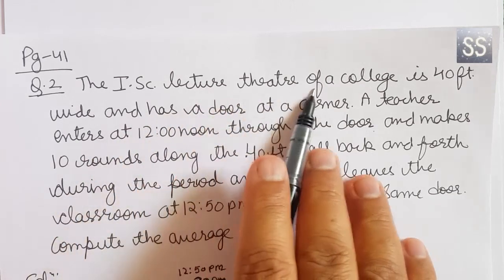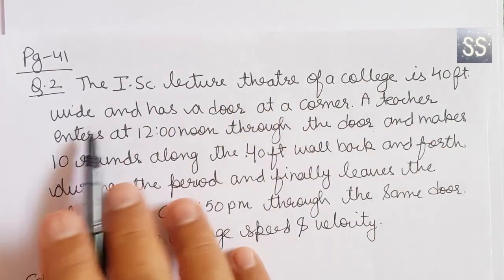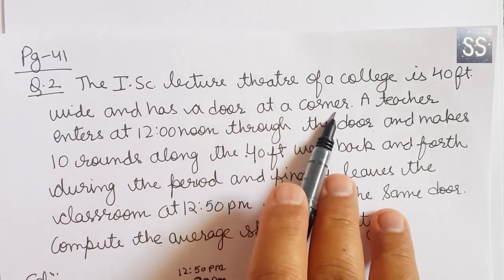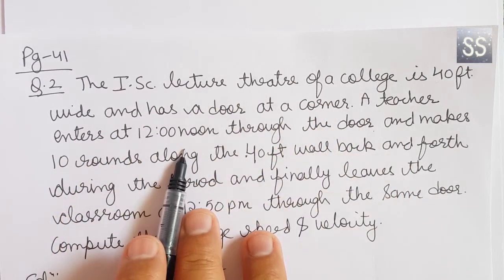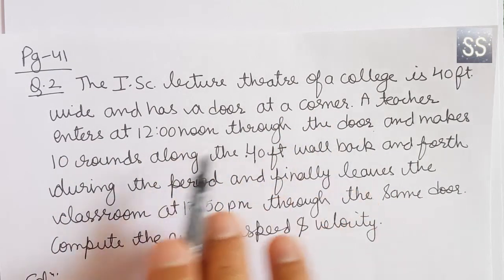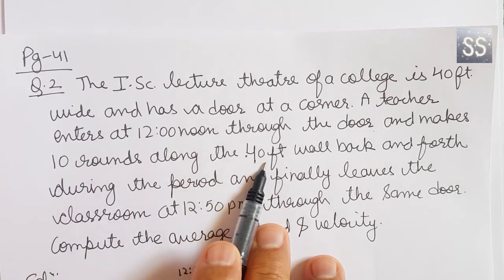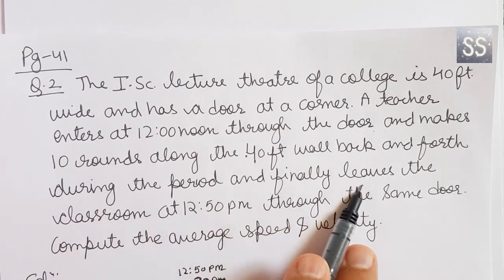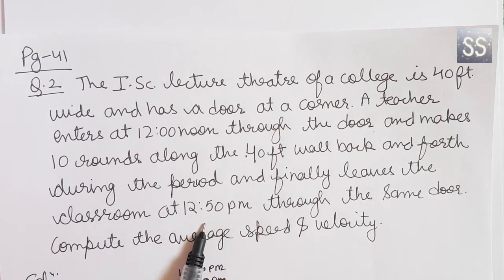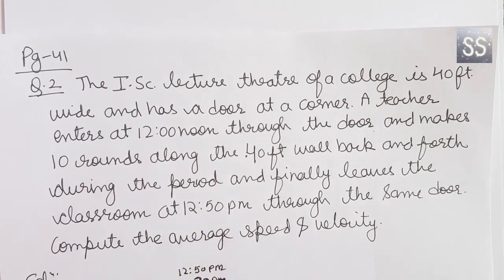The ISE lecture theatre of a college is 40 feet wide and has a door at a corner. A teacher enters at 12 noon through the door, makes 10 rounds along the 40 feet wall back and forth during the period, finally leaves at 12:50 pm through the same door. You have to find average speed and velocity. So what do we do?